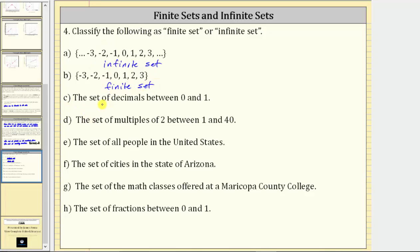For C, we have the set of decimals between zero and one. Because there are an infinite number of place values, there's an infinite number of decimals between zero and one, meaning we cannot determine the exact number of decimals between zero and one because they go on forever. The set of decimals between zero and one is an infinite set.